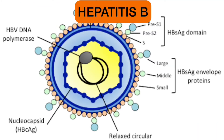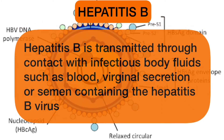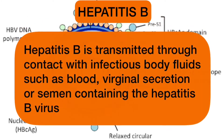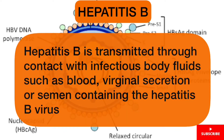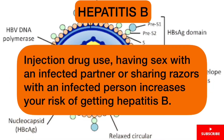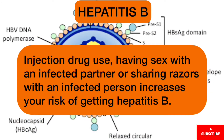Let's take a look at Hepatitis B. It is transmitted through contact with infectious body fluids such as blood, vaginal secretions, or semen containing the Hepatitis B virus. Injection drug use, having unprotected sex with an infected partner, or sharing razors with an infected person increases your risk of getting Hepatitis B.